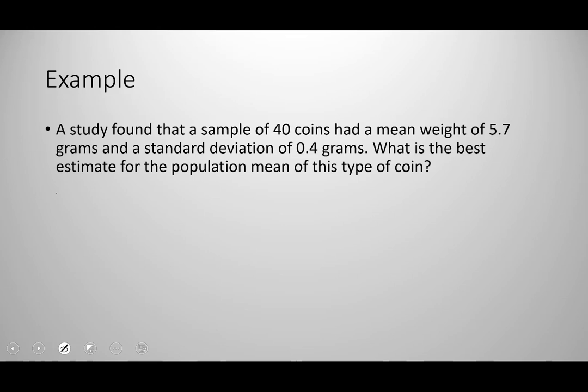So if we had a study that found from a sample of 40 coins a mean weight of 5.7 grams and a standard deviation of 0.4 grams, and we were asked to find the best estimate for the population mean for this type of coin, we would simply use our sample mean. Because X bar equals 5.7 grams, this would be our best estimate for the population mean.